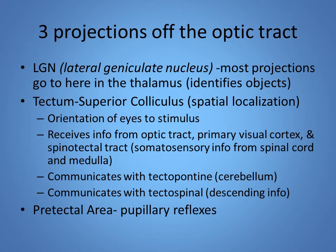The main body of fibers from the optic tract goes to the LGN, but some go to the tectum — specifically the superior colliculus in the brain stem — which helps with spatial localization and orienting the eyes to a stimulus, sometimes even before you're consciously aware of it. There's also the pre-tectal area, which helps with pupillary reflexes, where pupils constrict and dilate according to the light coming in.